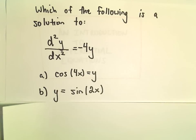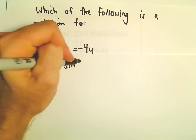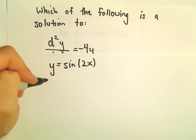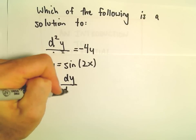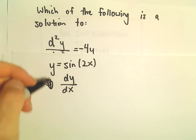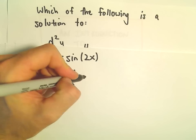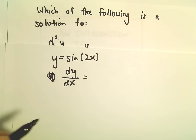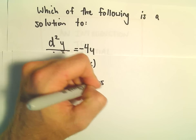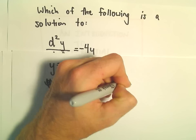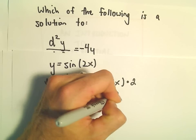Let's try part b: y equals sine of 2x. The first derivative dy/dx — I'll stick with Leibniz notation. The derivative of sine of 2x will be cosine of 2x times 2, or just 2 cosine of 2x.